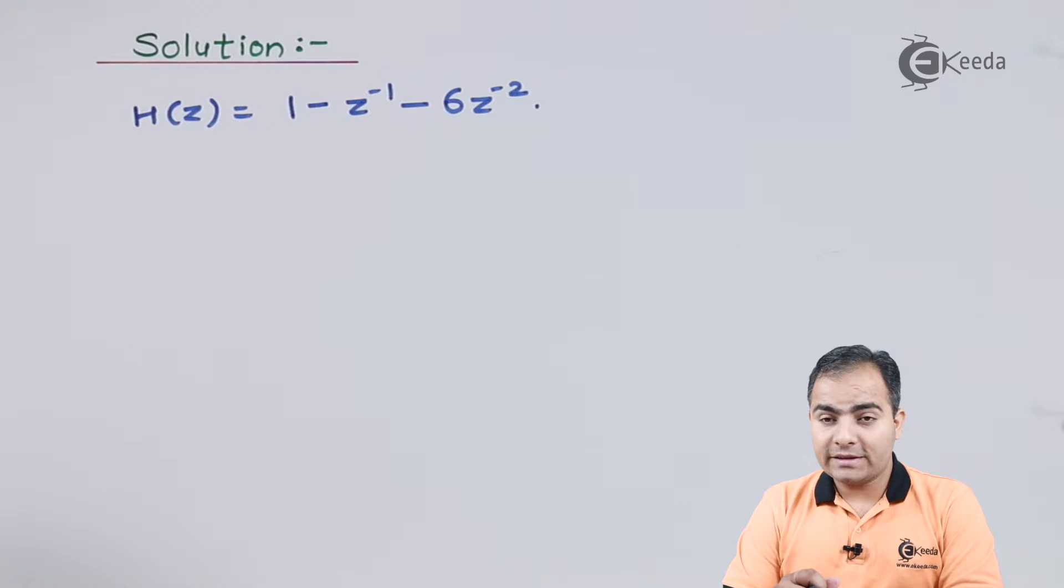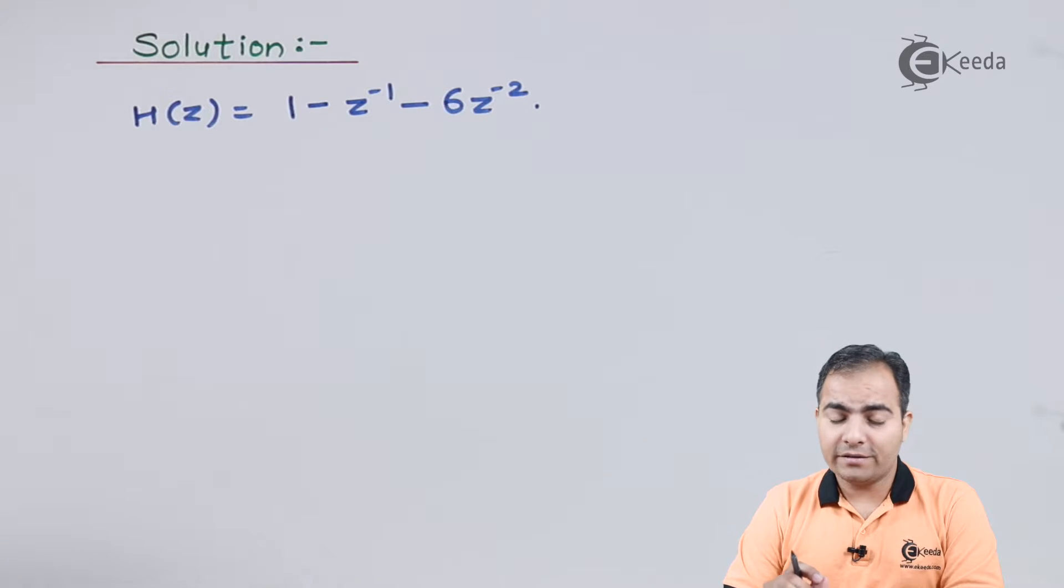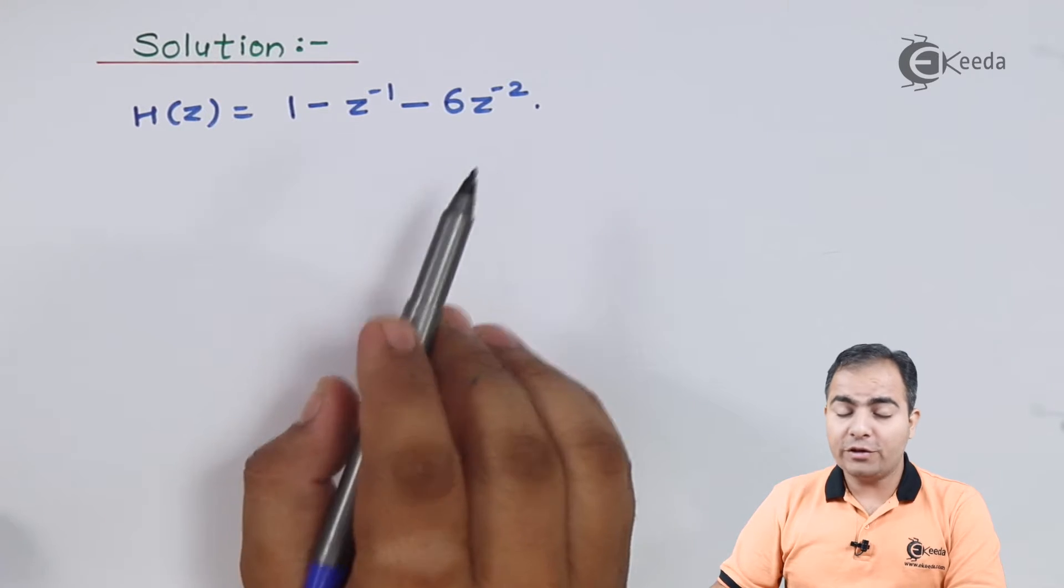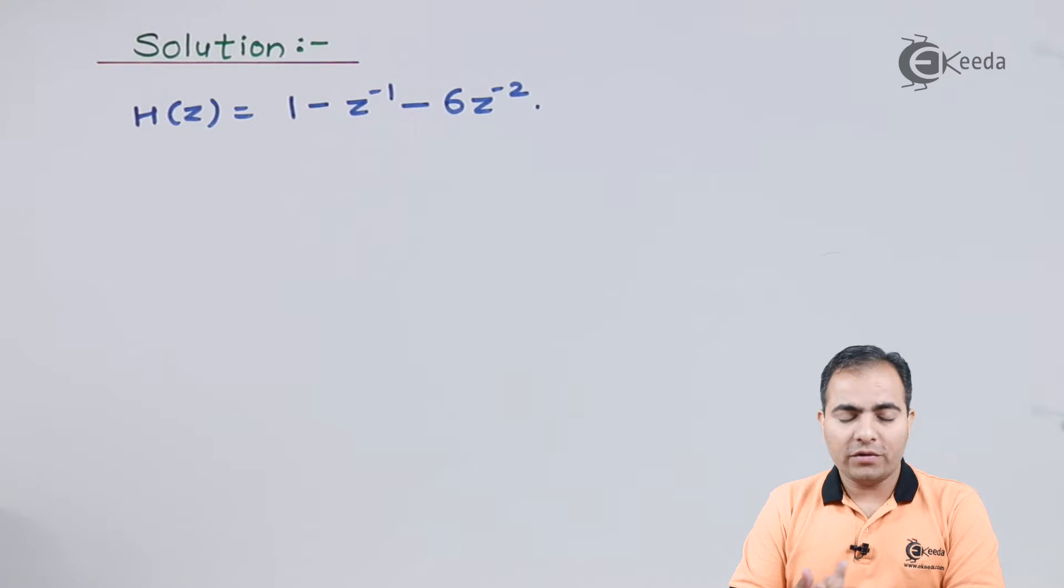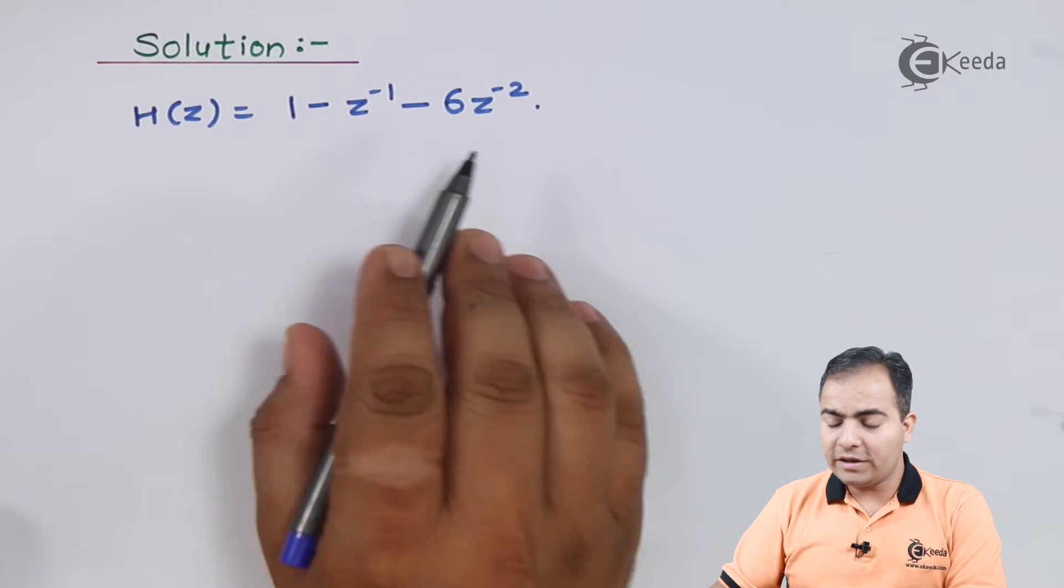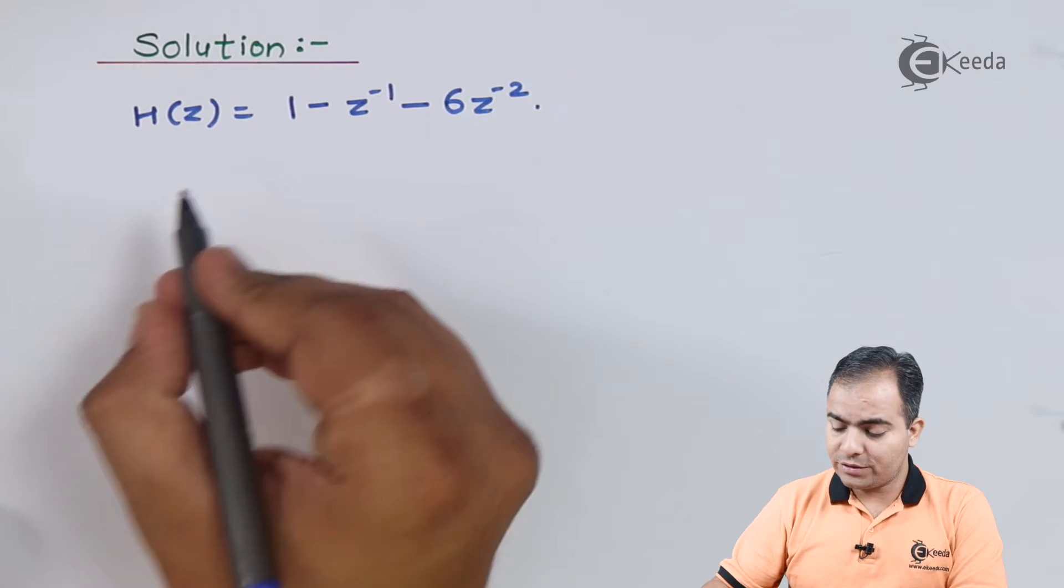First, we will calculate the factors. You have two choices: you can convert this whole equation into positive power of z or keep it as is and then calculate the factors. The easiest way is to convert it into positive power of z. I'll convert both the equations into positive power of z.